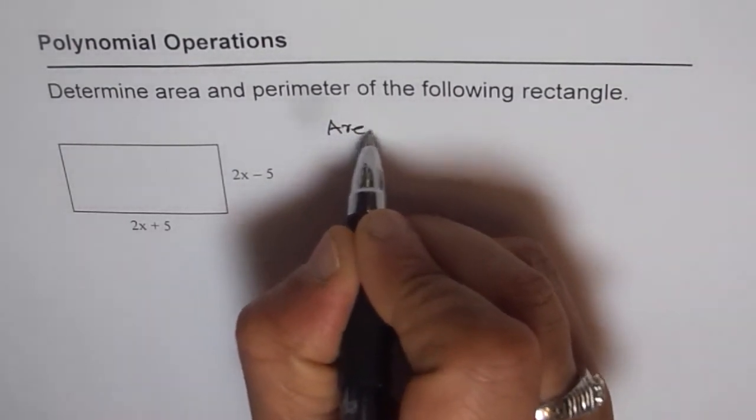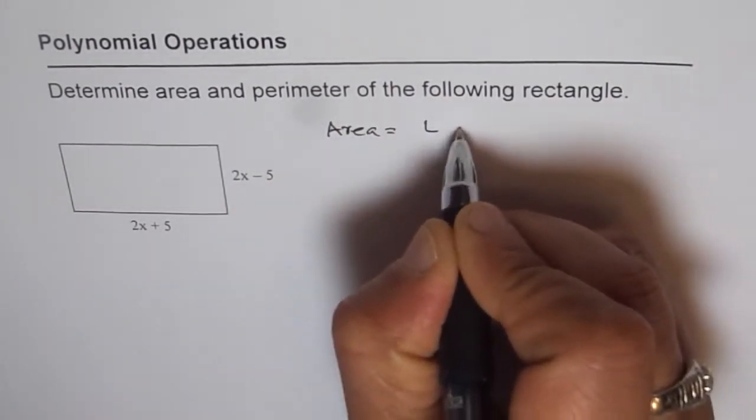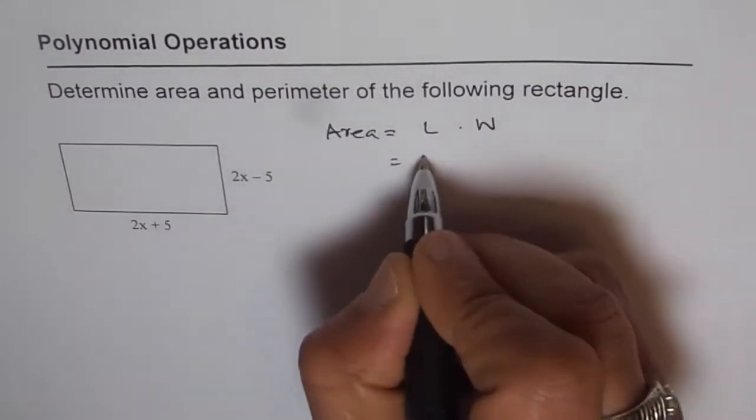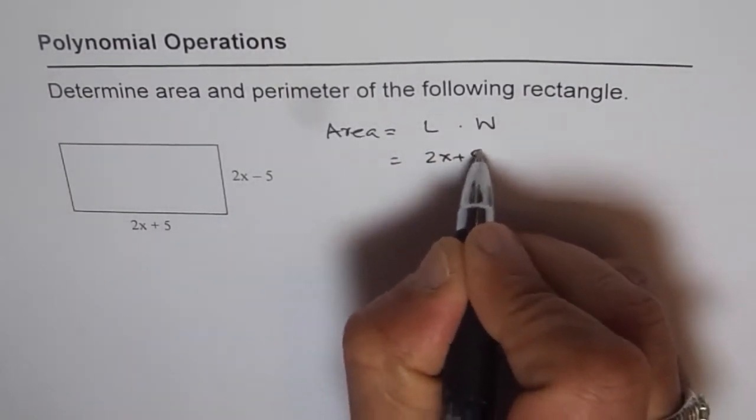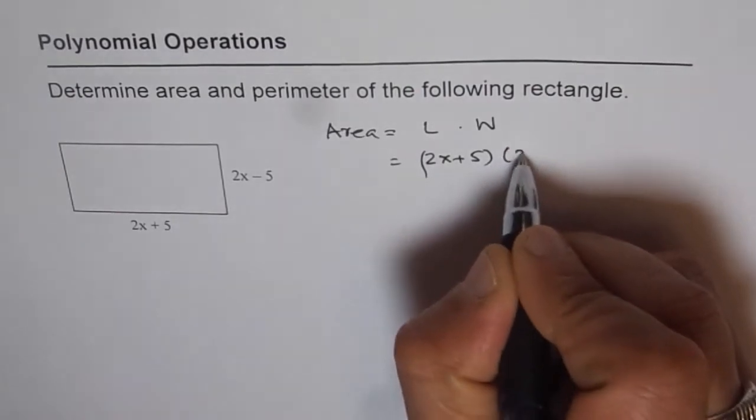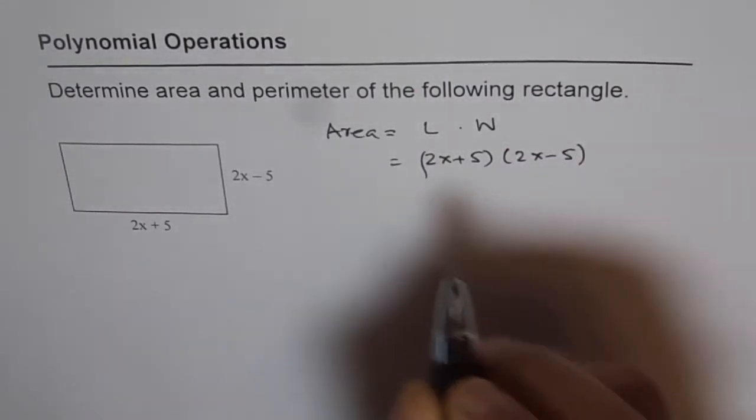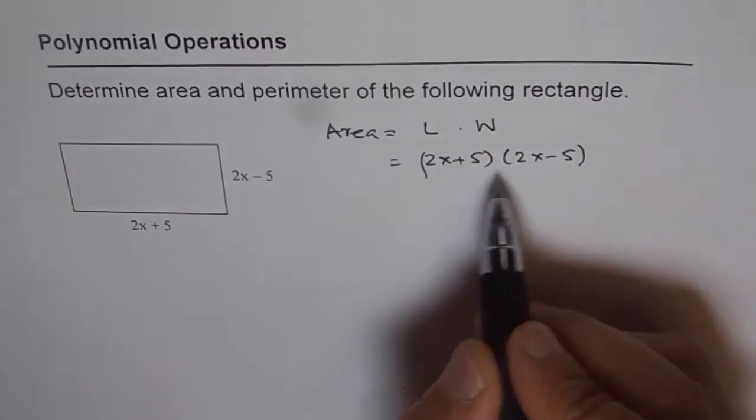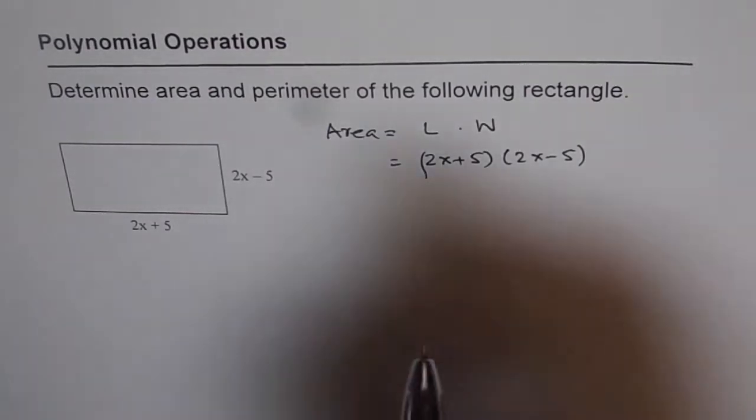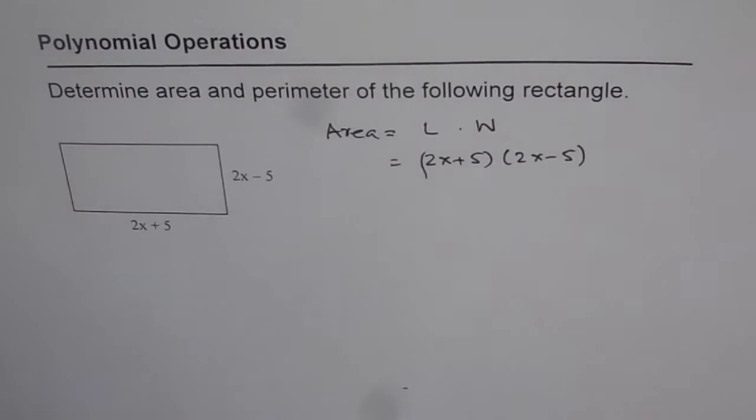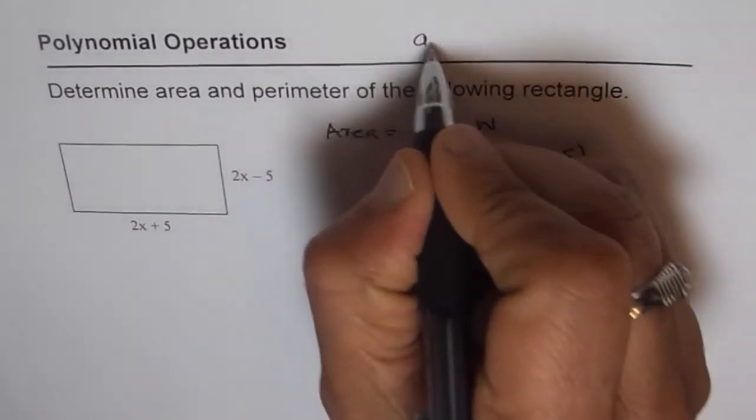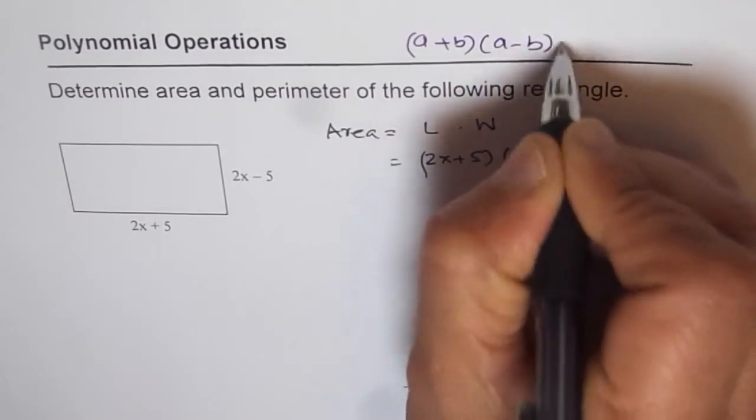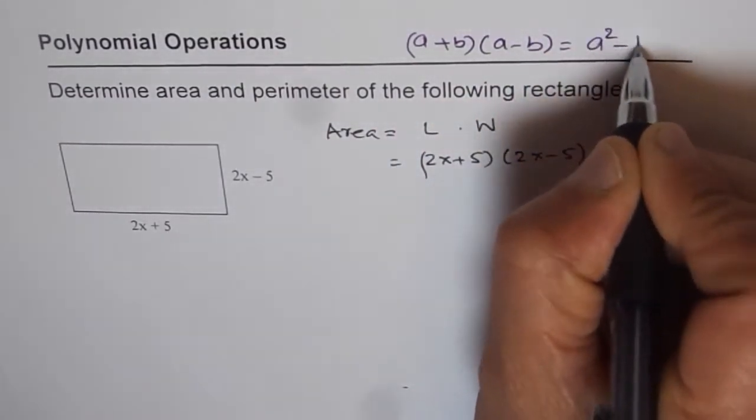Now what is area of a rectangle? Area is length times width. In this case, length is 2x plus 5 and the width is 2x minus 5. As you can see, it is product of sum and difference. So you expect difference of squares. I hope you remember the formula which I'll write here, which is a plus b times a minus b equals a squared minus b squared.